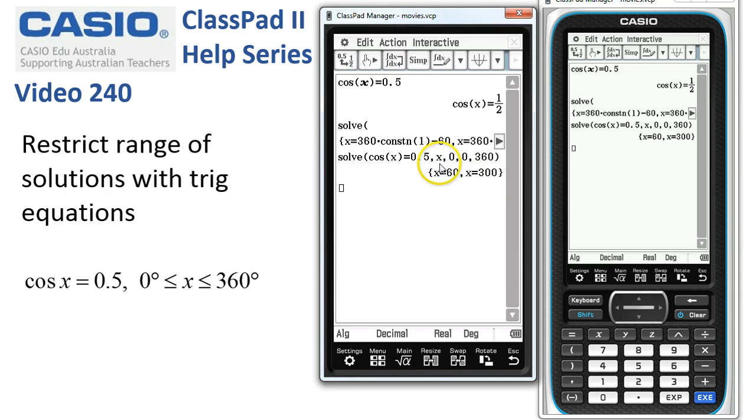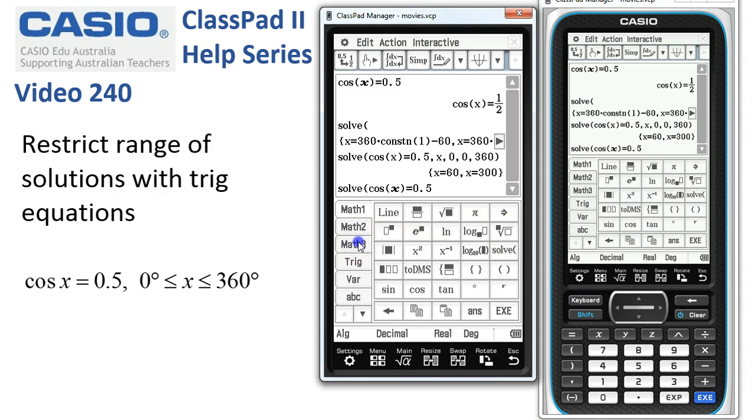There are other ways, though. If I bring down the word solve and copy down our equation so that we have solve cos(x) equals 0.5, I can also put a restriction. Here comes the keyboard - down to Math 3 and Given.